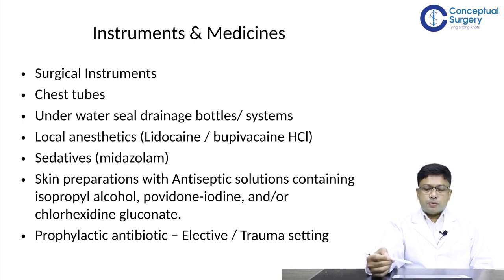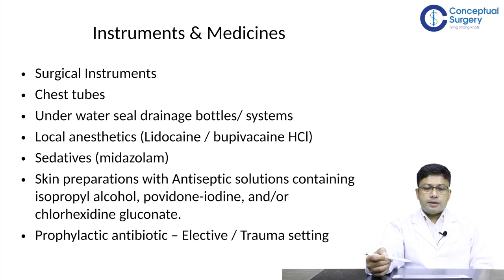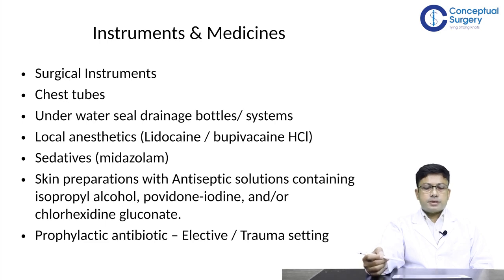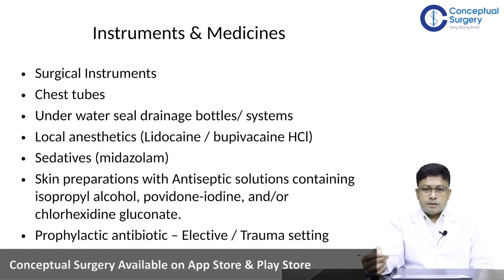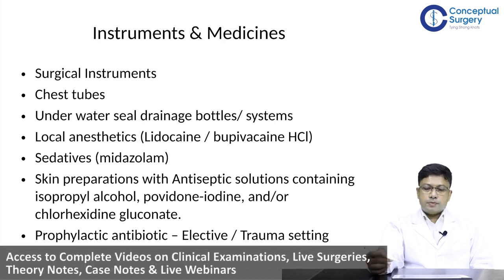It is imperative to check all necessary instruments, surgical tubes, and drainage bottles before commencing the thoracostomy procedure. Appropriate chest tube sizes should be selected. Various underwater seal drainage systems are available. Local anesthetic solutions — usually 2% lidocaine — should be available, and IV anxiolytic drugs if required. Skin preparation solutions like povidone-iodine or chlorhexidine gluconate should be available. In elective or traumatic settings, IV antibiotics are given before inserting a chest tube.